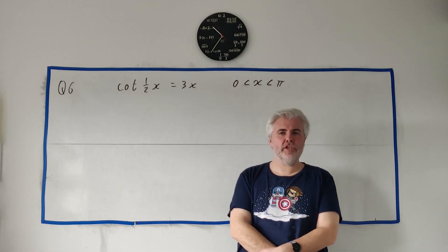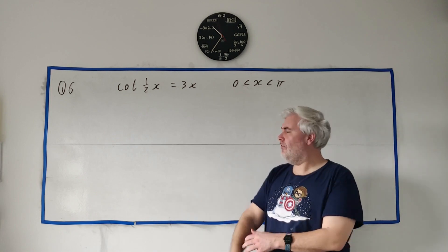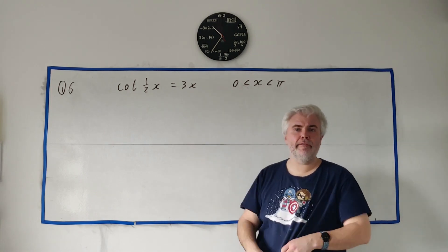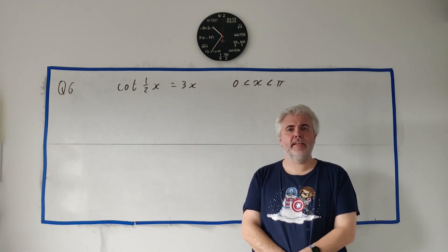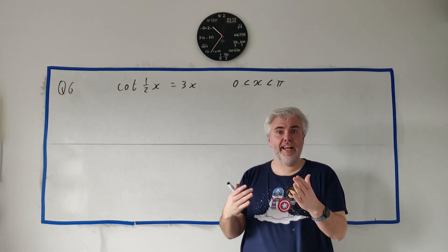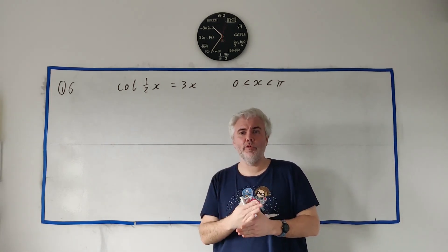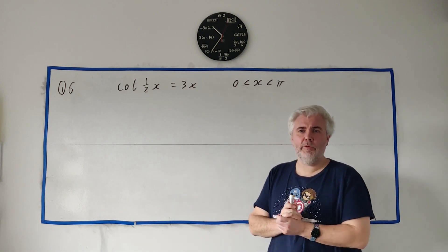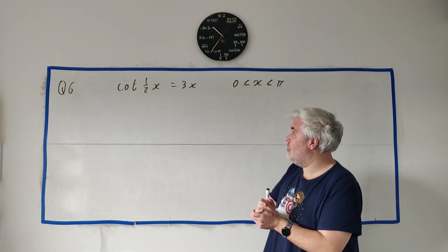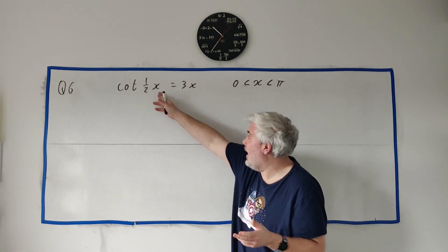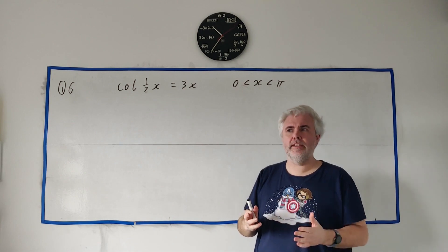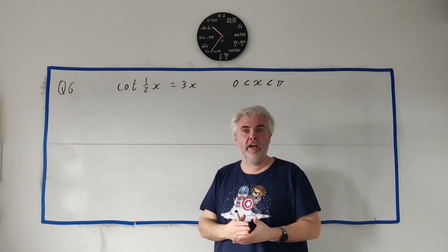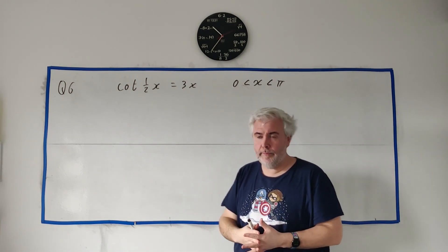In question 6 we're given this trigonometric function here and they tell us it has a root. They want us to show that the answer for x is between 0.5 and 1.